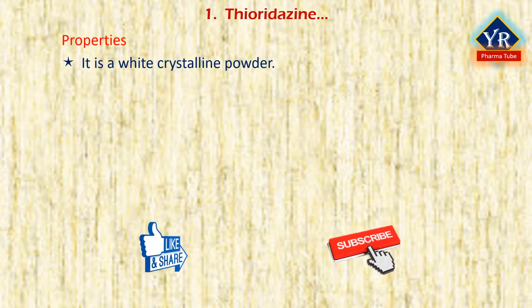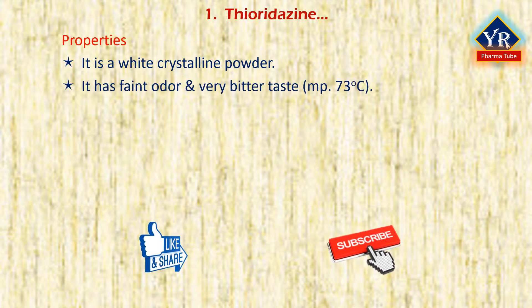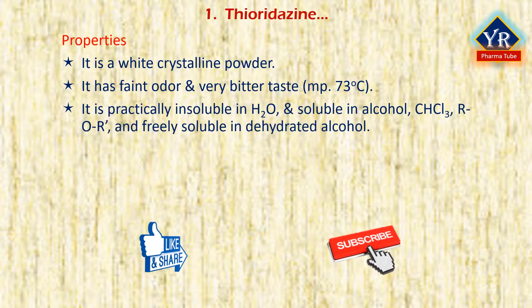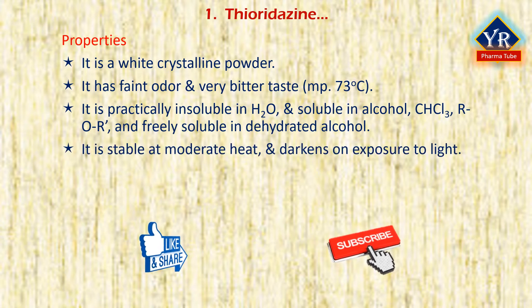Thioridazine is a white or almost white fine colourless crystalline solid with a faint odour and very bitter taste, with a melting point at 73°C. It is practically insoluble in water and soluble in alcohol, chloroform, and ether, and freely soluble in dehydrated alcohol. It is slightly soluble in acetone, stable at moderate heat, and darkens on exposure to light. It should be kept in a well-closed container protected from light.